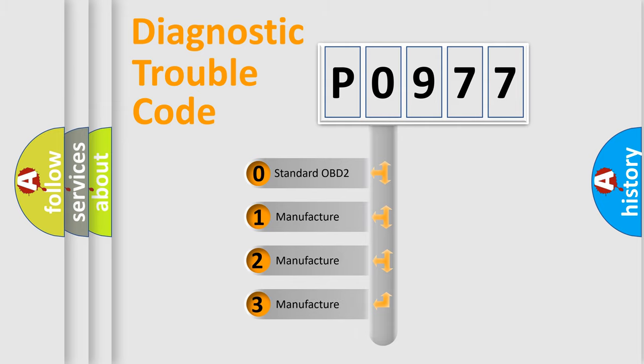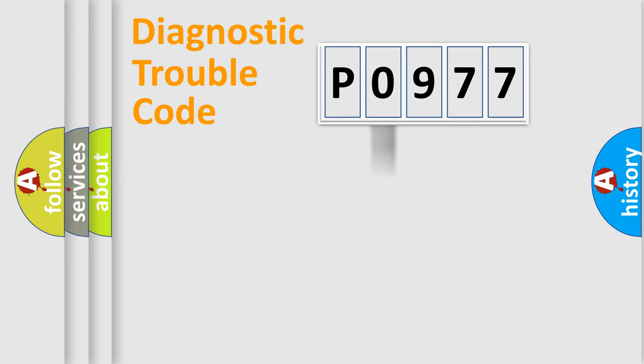If the second character is expressed as zero, it is a standardized error. In the case of numbers 1, 2, 3, it is a manufacturer-specific expression of the car specific error.